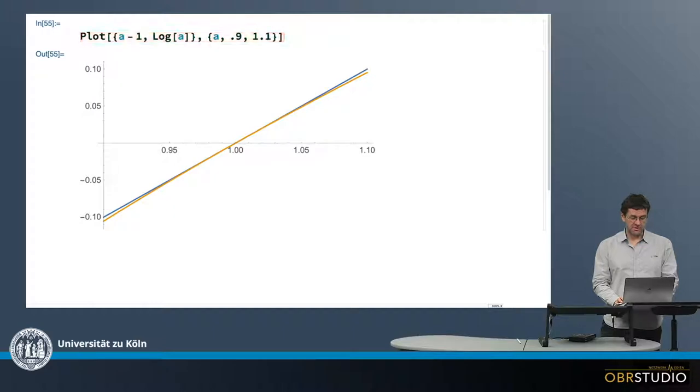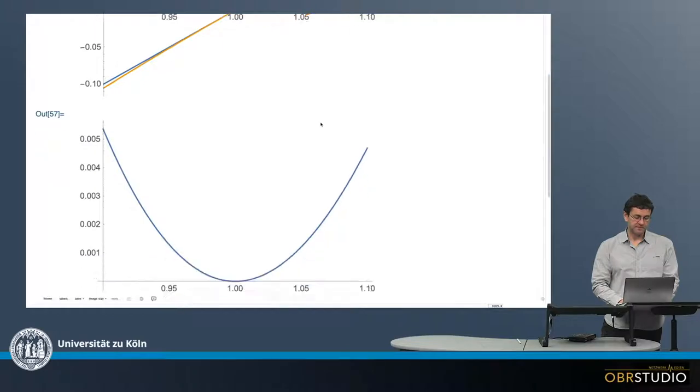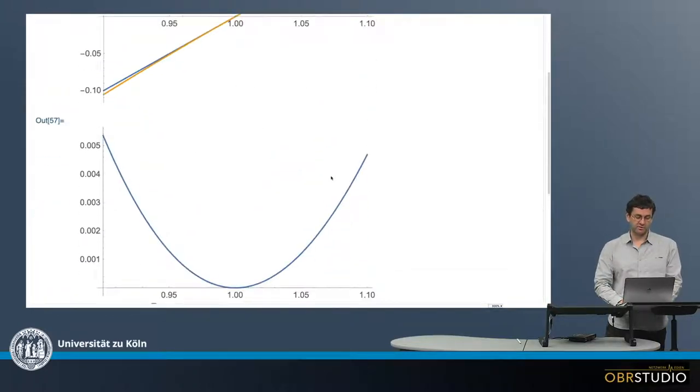And how similar, you can find out by simply subtracting from the first function, from the first, well, which is always the y-value, should be in normal brackets, and then minus this logarithm. And here we can see the difference, then, for this interval from 0.9 to 1.1.